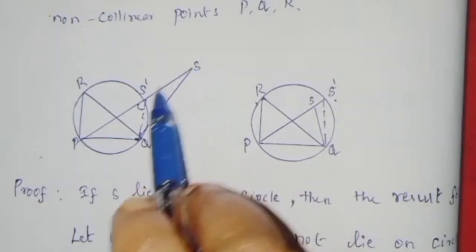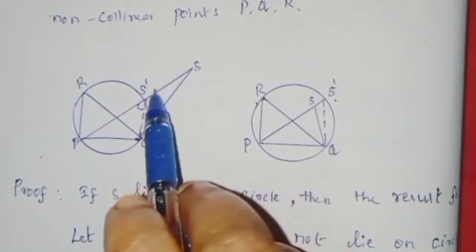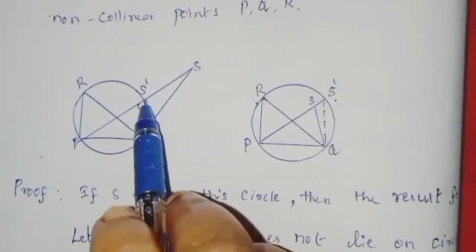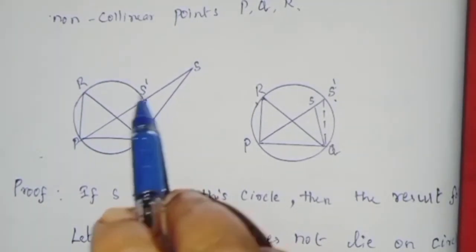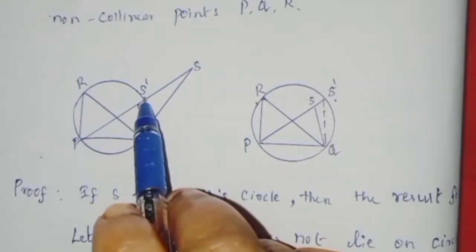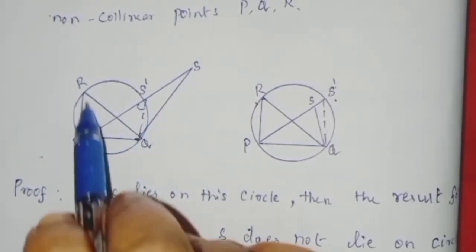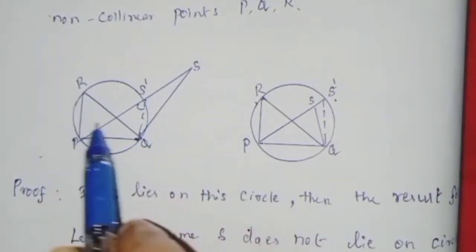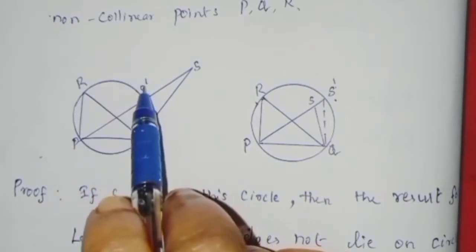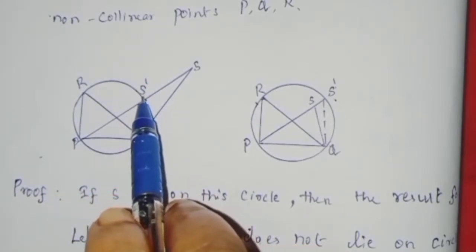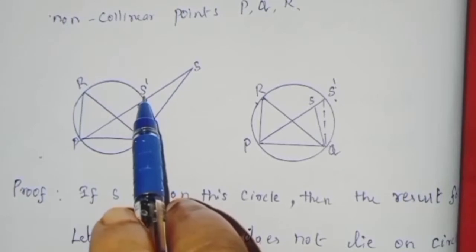You can see the 3 points marked on the circle. Q and S are connected; P and R are connected. Now the fourth point S should lie on this circle.